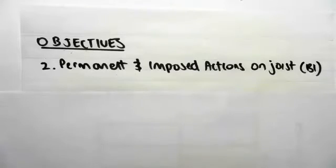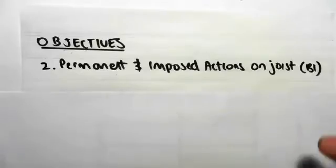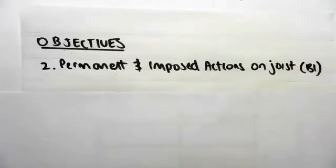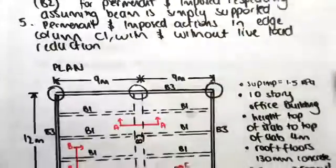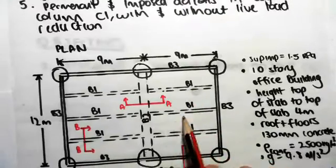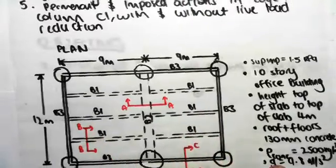The objective of this video is to find the permanent and imposed actions on joist B1. Just to show you where we're at, we're looking at these joists B1.